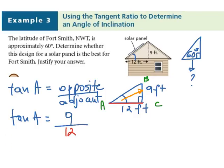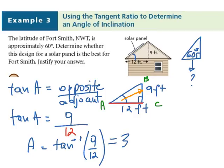Now we're looking for this A angle, and like in previous question, we are going to take the inverse of tan, 9 over 12, and we'll get the angle of 37. And look, it does not match our angle 60, therefore, our panel will be not very efficient.